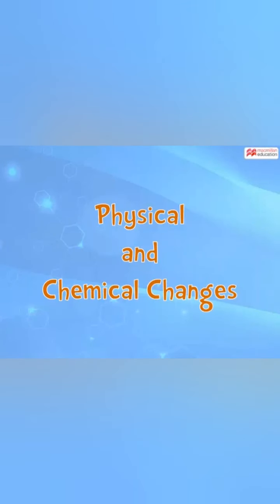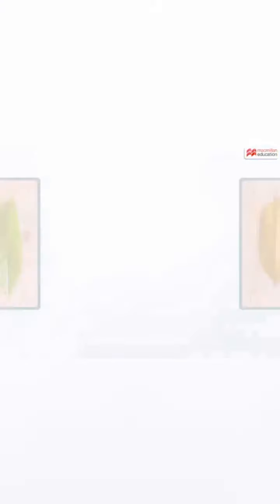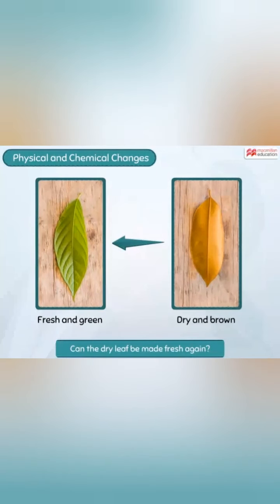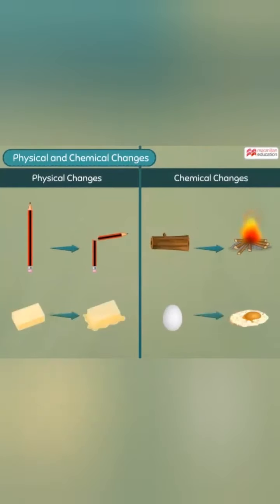Let's look at these leaves. The first leaf is fresh and green while the other is dry and brown. Can we make the dry leaf fresh again? We cannot, because the leaves have undergone a chemical change that cannot be reversed. All the changes that take place in our surroundings are either physical or chemical changes.